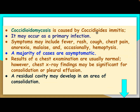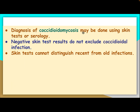Coccidiomycosis is caused by Coccidioides immitis. It may occur as a primary infection. Symptoms may include fever, rash, cough, chest pain, anorexia, malaise, and occasionally hemoptysis. A majority of cases are asymptomatic. Results of chest examination are usually normal; however, chest x-ray findings may be significant for consolidation or pleural effusion. Residual cavities may develop in an area of consolidation. Diagnosis may be done using skin test or serology, but a negative skin test does not exclude coccidial infection, and skin testing cannot distinguish recent from old infection.